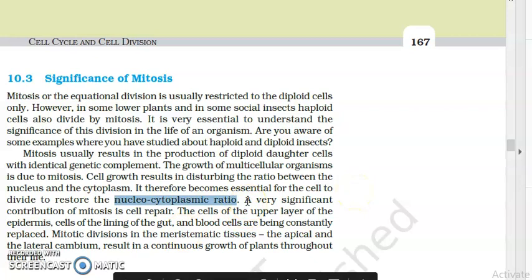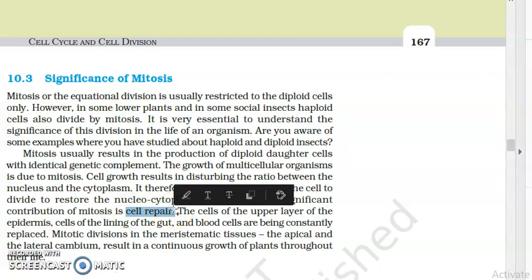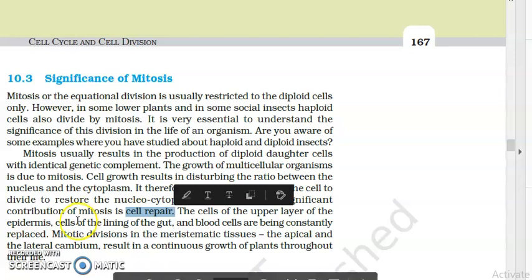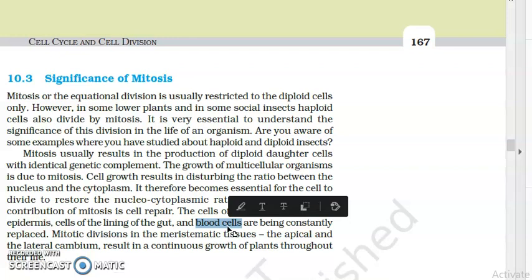So another important function is cell repair. So I've already mentioned that in routine life, in day-to-day activities, these many organisms they lose a lot of cells to growth, injuries, infections, environmental stresses. So how are those cells constantly replaced? Of course, by cell division, which is mitosis. So which cells are constantly being lost? Your skin cells, the cells of the epidermis, for example. Then the inner lining of the gut, of the digestive tract, of the urogenital tract. Then there are the blood cells which are constantly being replaced, RBCs, white blood cells, etc. So this is of key significance: cell growth. So the growth of organisms is dependent upon mitosis, repair work, mitosis. Of course, the maintenance of the karyoplasmic ratio, again mitosis.